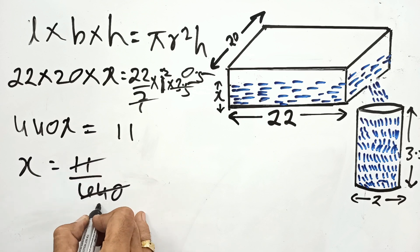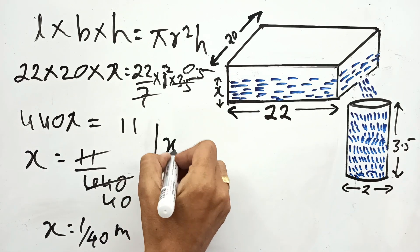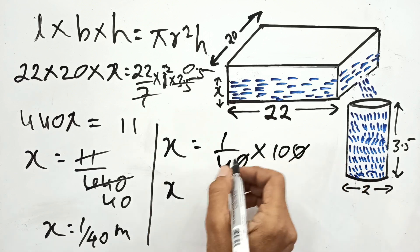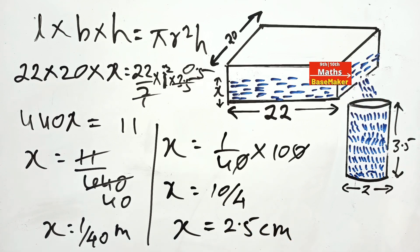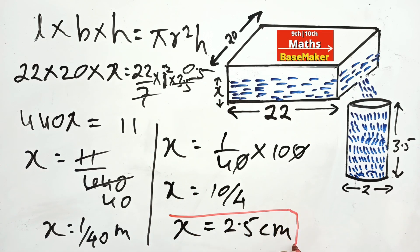11 upon 440 so X is equal to 1 upon 40 meter. To convert 1 upon 40 meter into centimeter, multiply by 100. So X, the rainfall, is equal to 2.5 centimeter.